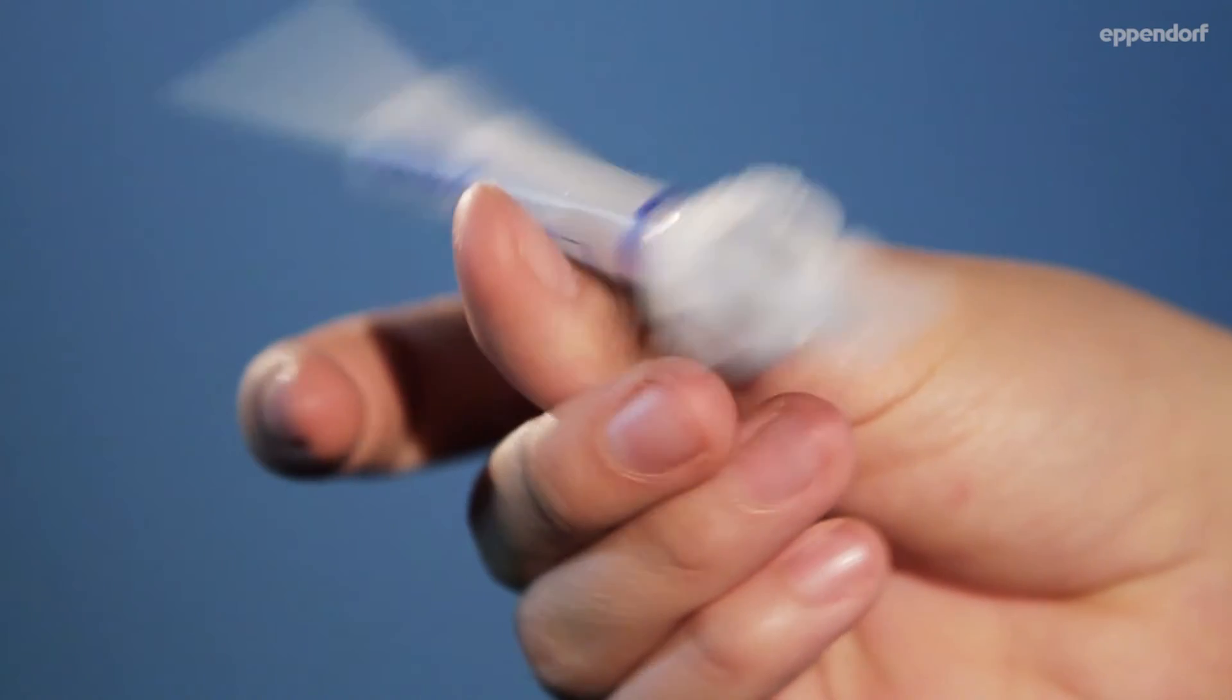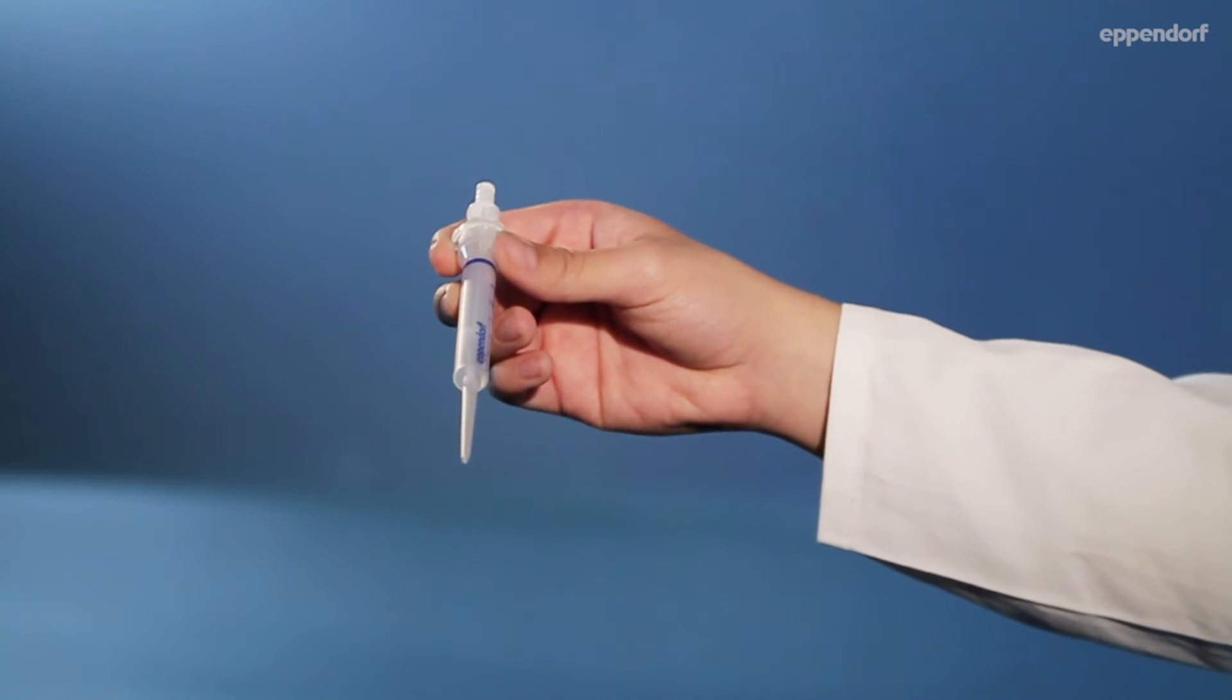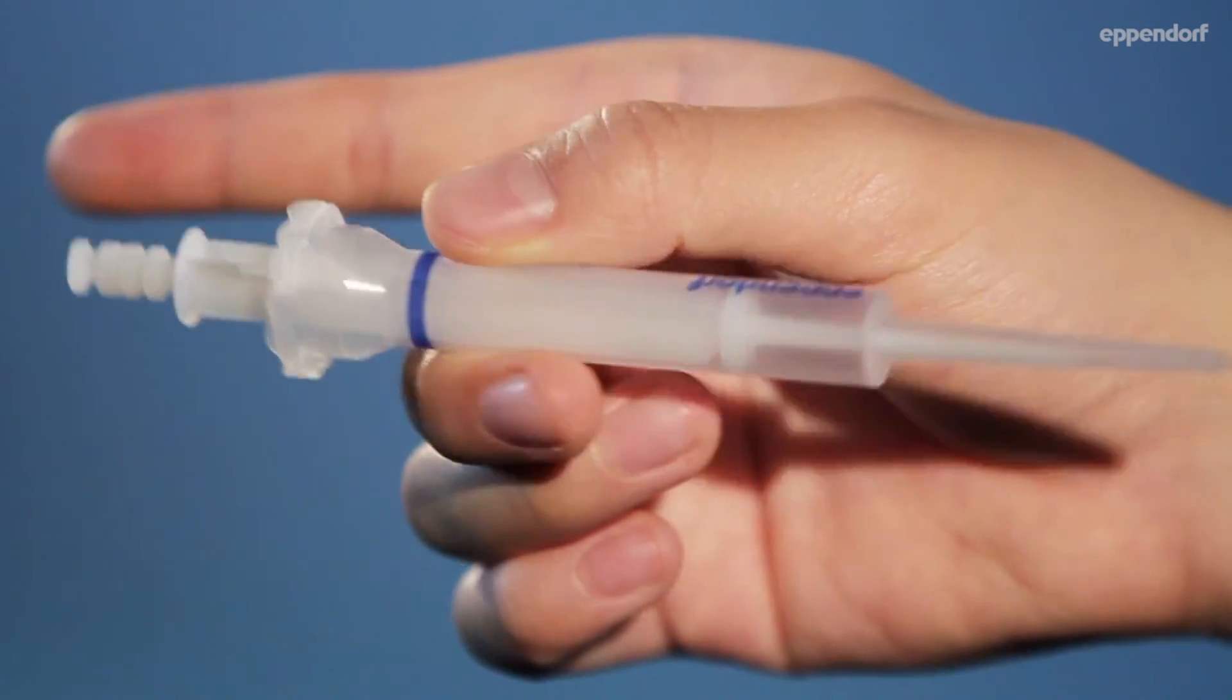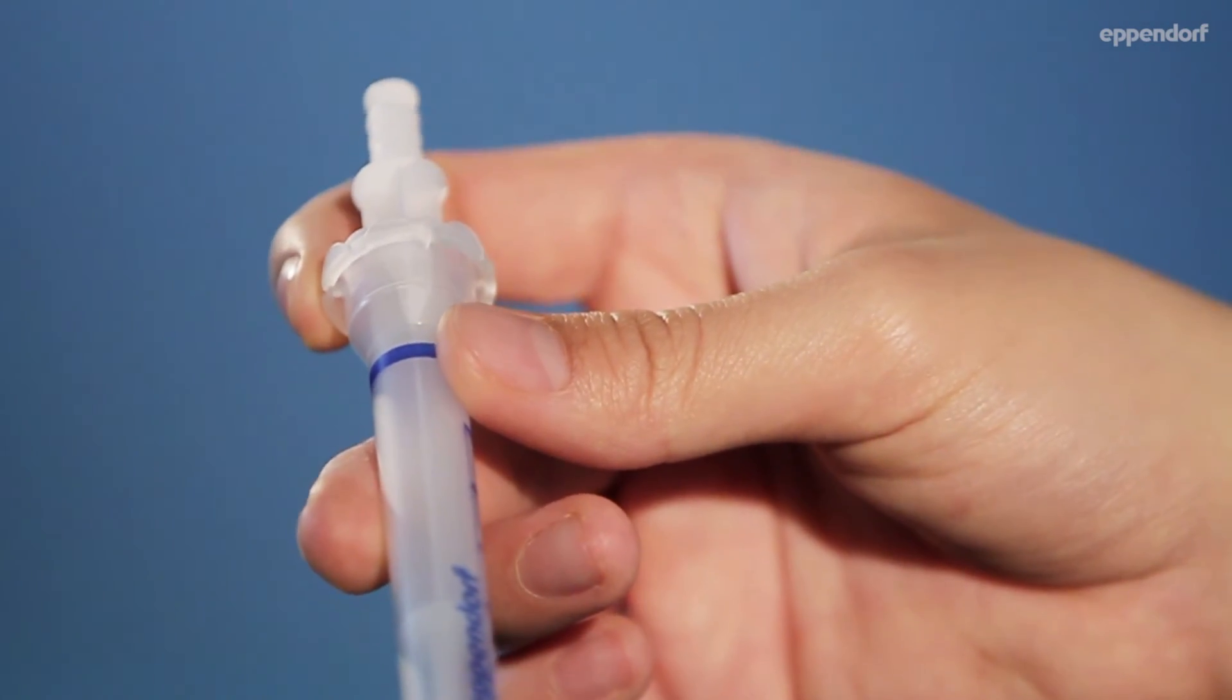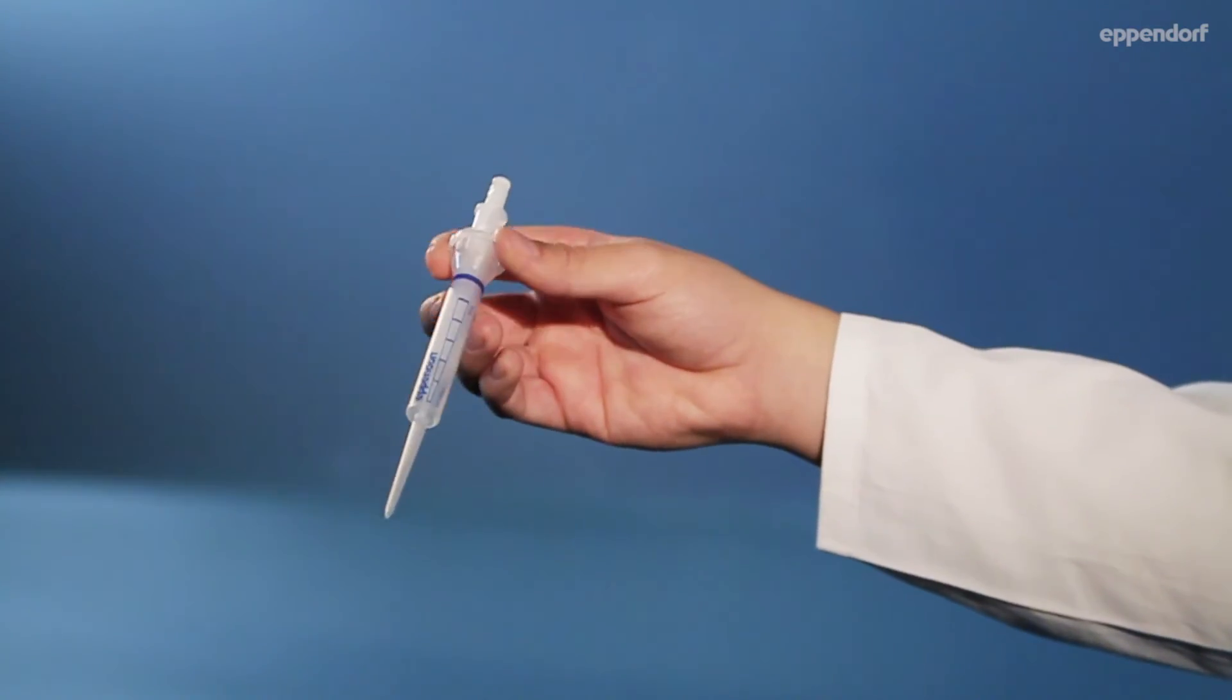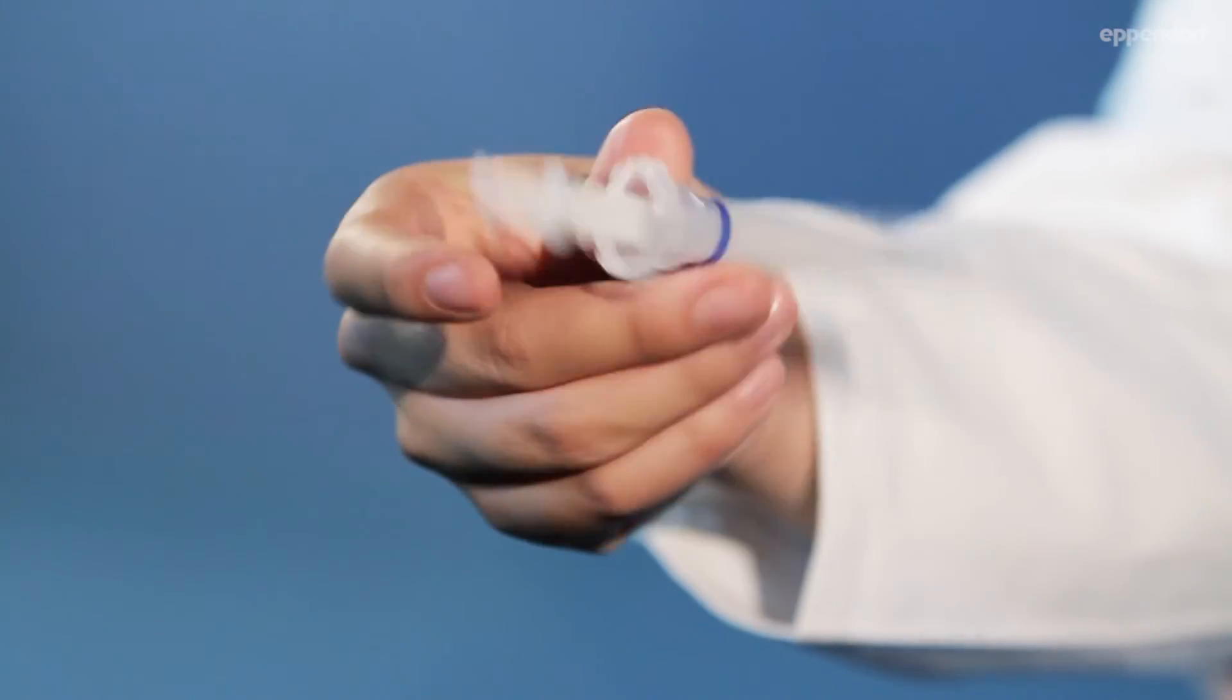Now we can start to push the combi tip around our thumb. To do so, we have to move the middle finger as close to the thumb as possible and release the combi tip with our index finger. So push the combi tip with your middle finger and catch it with your index finger and thumb.